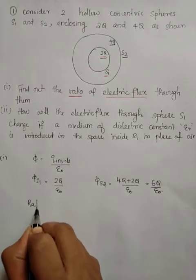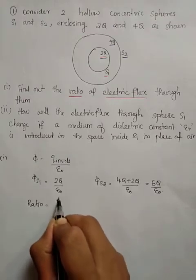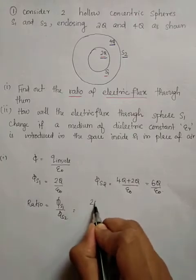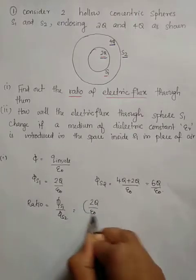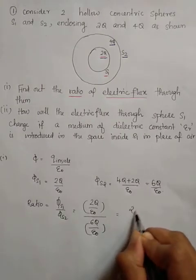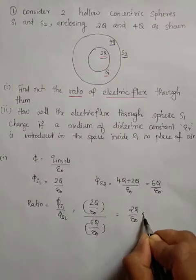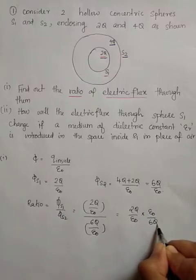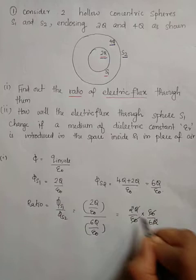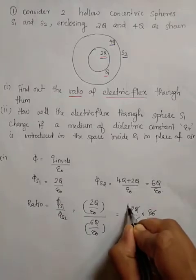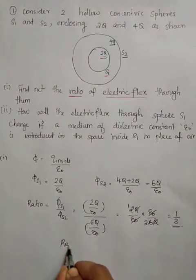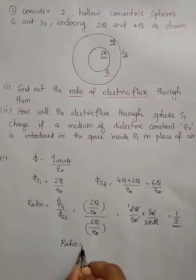The ratio of flux through S1 to flux through S2 is equal to 2Q by epsilon zero divided by 6Q by epsilon zero. Epsilon zero cancels out, giving 2 by 6, which simplifies to 1 by 3. So the ratio is 1 is to 3.